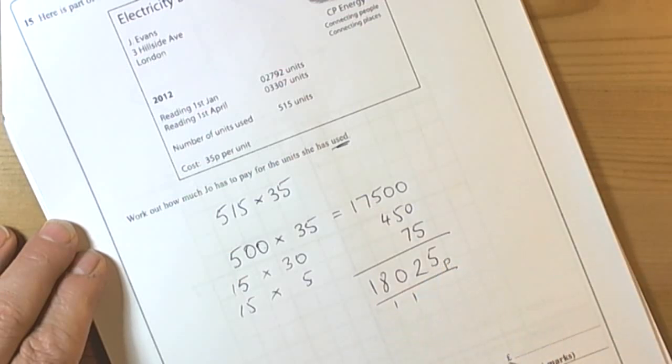But remember we are doing pence here. The question wants it in pounds, so we divide this by 100, so move it down two places to become 180 pounds and 25p.